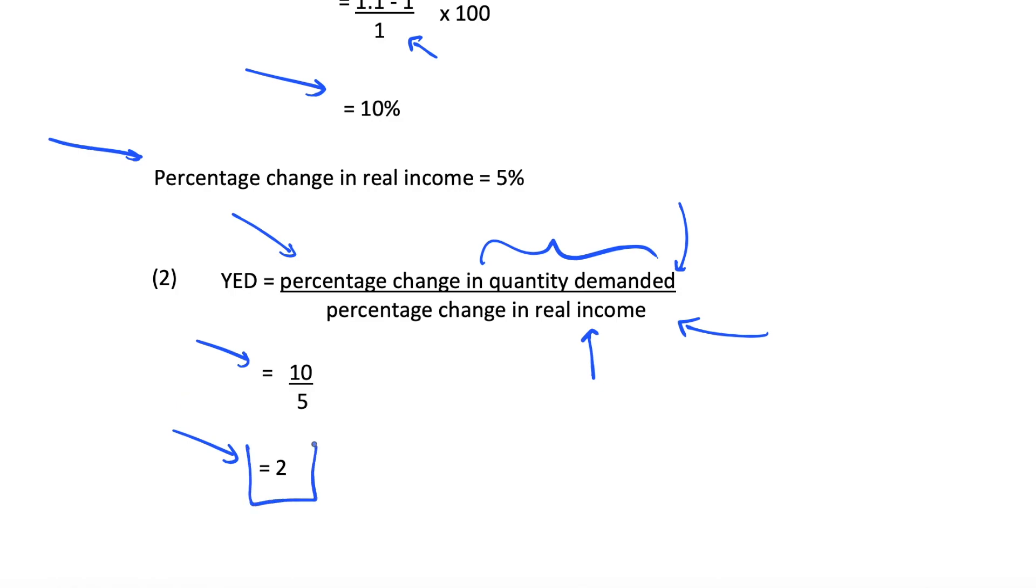This is a YED of 2 here, so this is elastic because this is greater than 1. We may even think of this as being a luxury good where we have a very elastic YED, which we've discussed in previous videos when we talked about normal goods and will do in the future again.